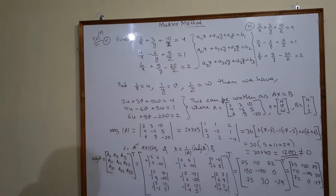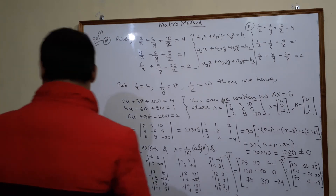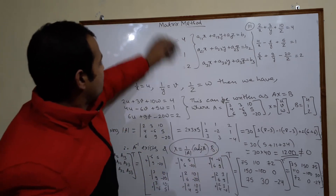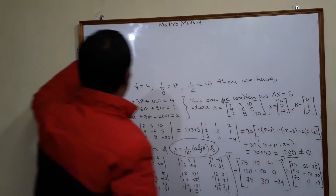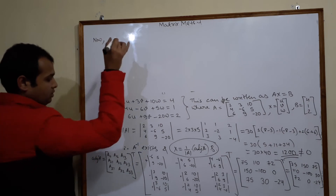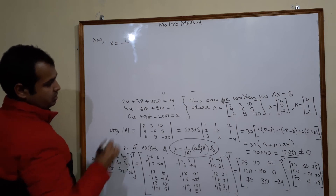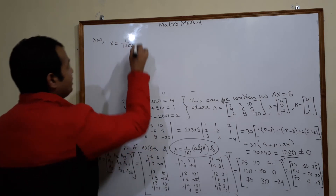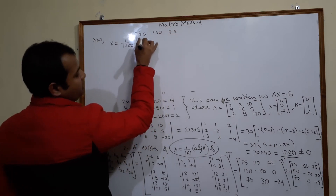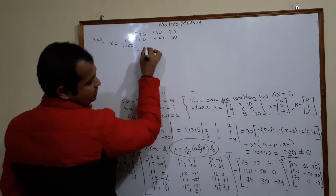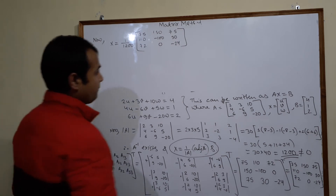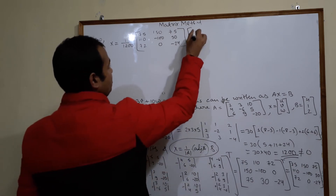After taking the transpose, the adjoint of matrix A is: [[75, 150, 75], [110, -100, 30], [72, 0, -24]]. Now substituting the values, X = (1/1200) × adj(A) × B, where B = [4, 1, 2].